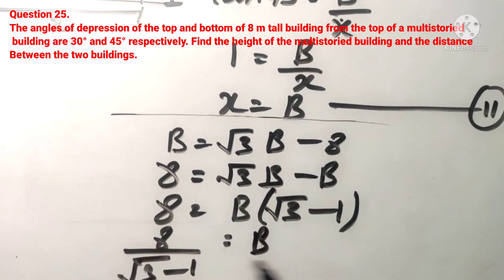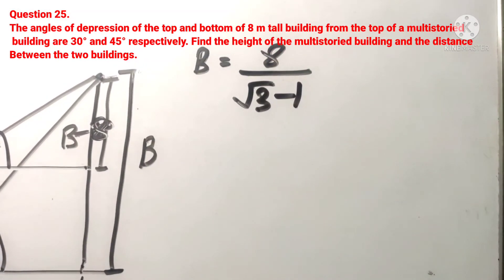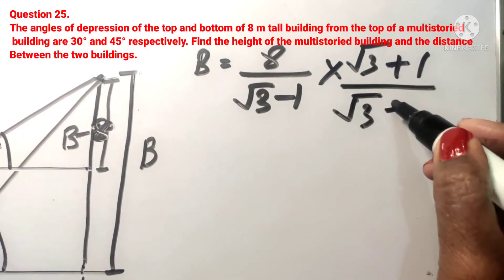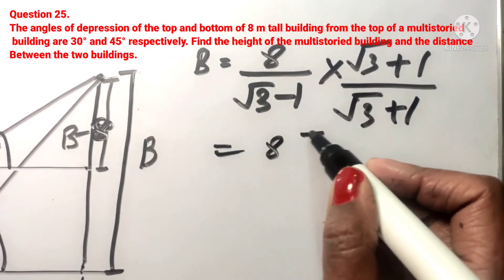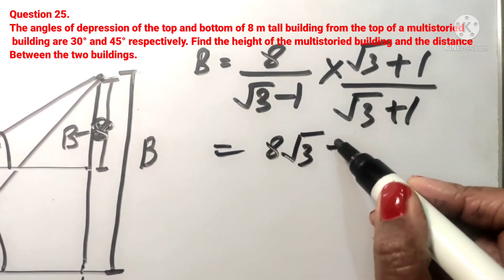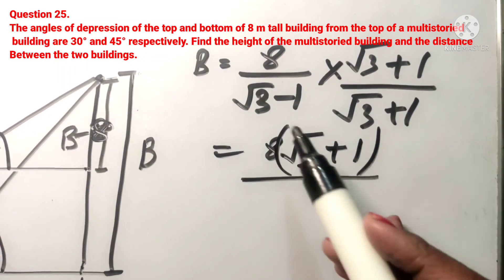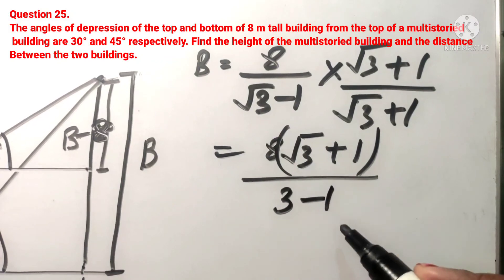We cannot leave the answer as this — we have to rationalize. We multiply numerator and denominator by (root 3 plus 1). In the numerator, 8 is multiplied by (root 3 plus 1). In the denominator, we get root 3 squared minus 1 squared, which gives 3 minus 1 equals 2.